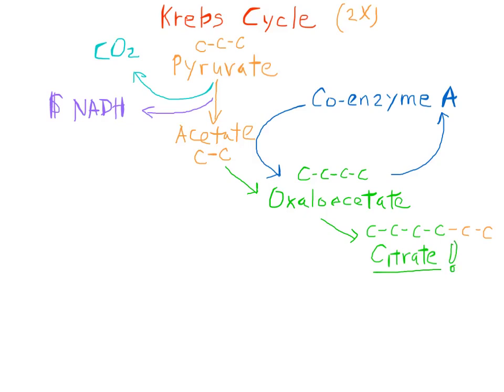You might be asking, where's the cycle in the Krebs cycle? Well, the citrate is going to undergo some more biochemical reactions, and eventually we're going to end up back where we started with oxaloacetate.